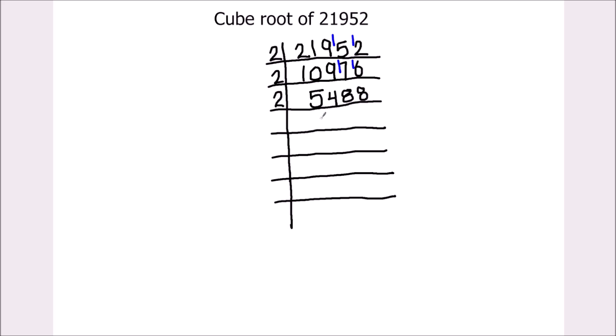Now again we are going to divide by 2. 2 times 2 is 4. 1 is remainder. This becomes 14. 2 times 7 is 14. 2 times 4 is 8 and 2 times 4 is 8.